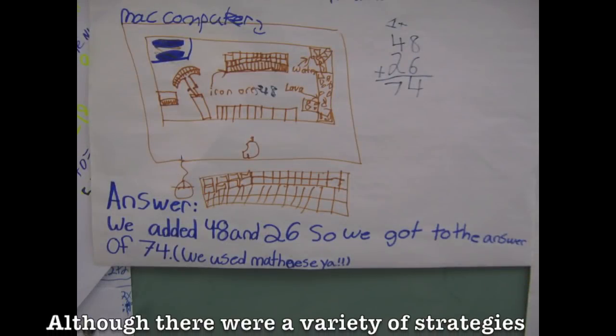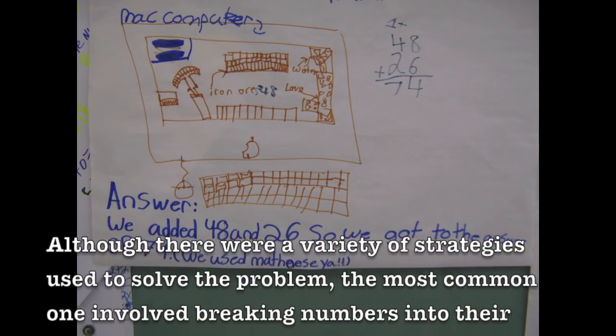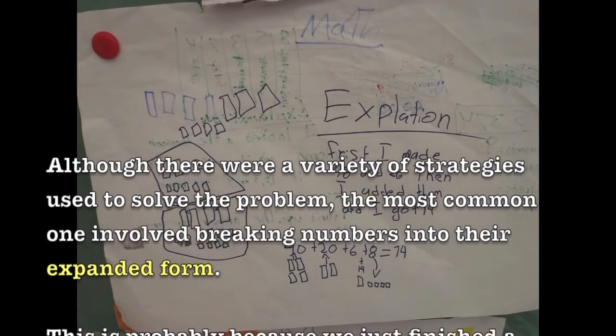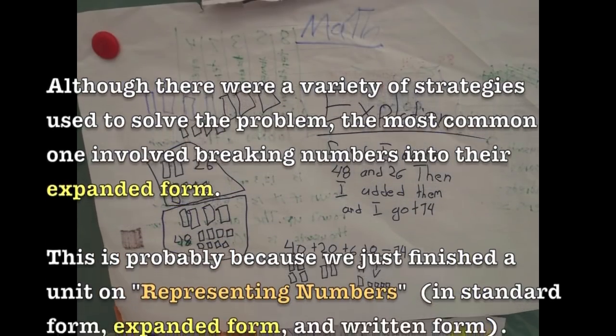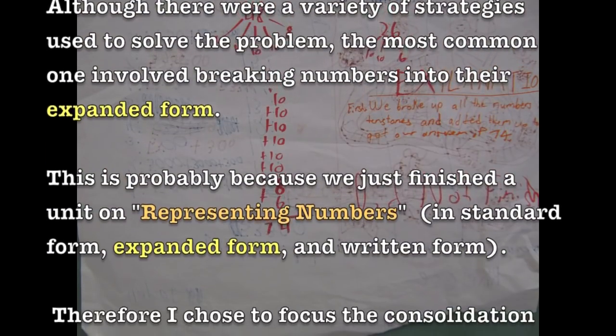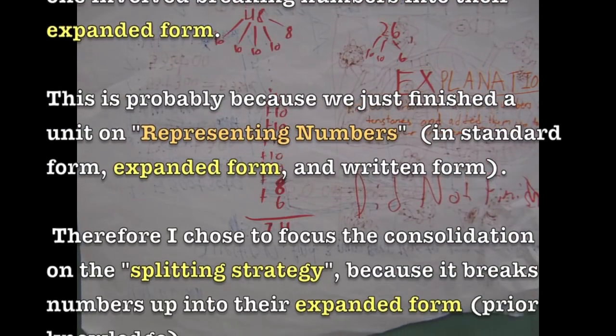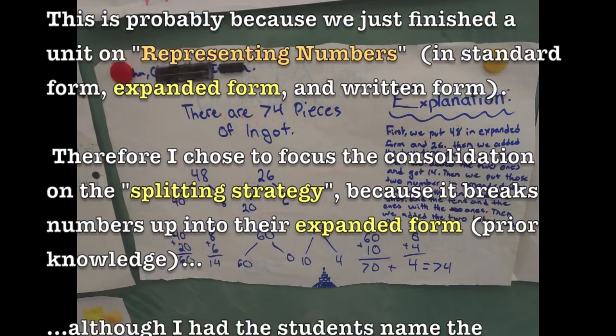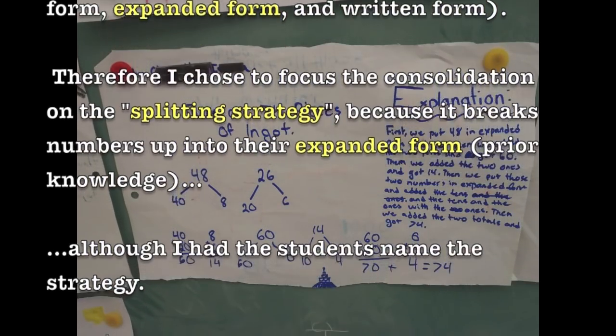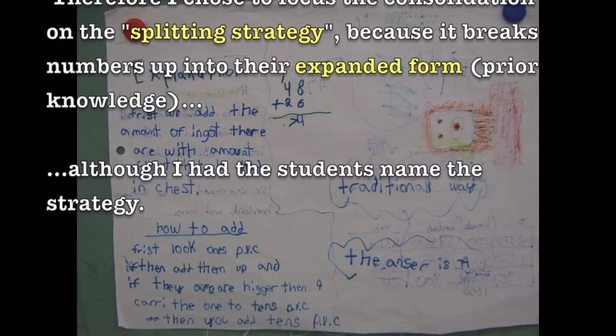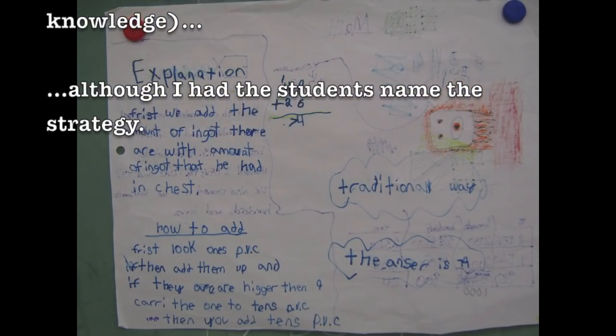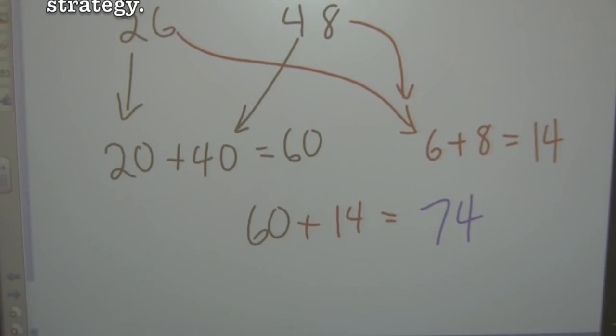We're going to start a new unit today. We just finished doing our unit on representation of numbers. What kind of things did we talk about? Rounding, place value columns, expanded form. Good. You were going to be correct.